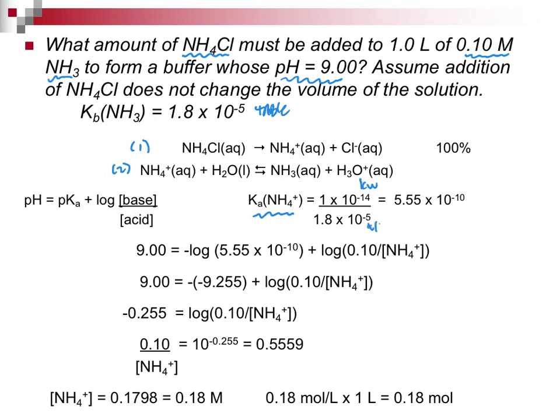So what I need to do is use my Kw for water and my Kb for ammonia. And I come up with the value of the Ka for NH4+. So I guess what I should have written here is I should have written pH is pKa plus the log of the base divided by the acid.